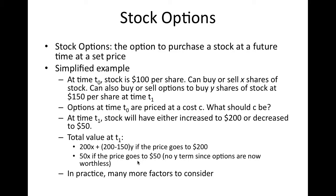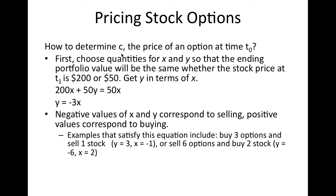In practice there's much more to consider — stock doesn't just go up or down to one of two prices — but for now we keep things at this simplified level. To determine C, we first pick quantities X and Y so that the holder ends up with the same amount regardless of which outcome occurs. Setting the two value expressions equal to each other gives Y = −3X by simple algebra.